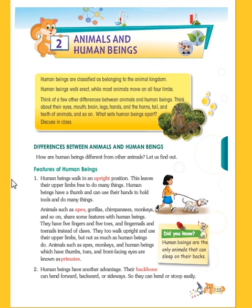Human beings walk in an upright position. As you can see in this picture, the girl is moving in an upright position. This leaves their upper limbs free to do many things. Human beings have a thumb and can use their hands to hold tools. When we are walking with our legs, our hands are free, so we can do many things.